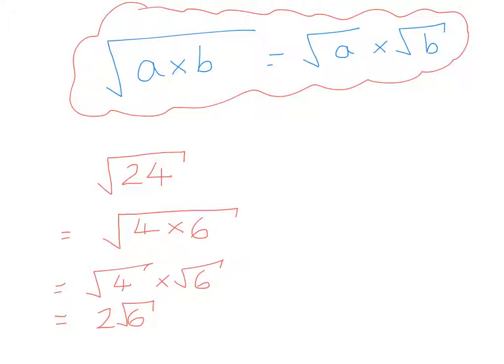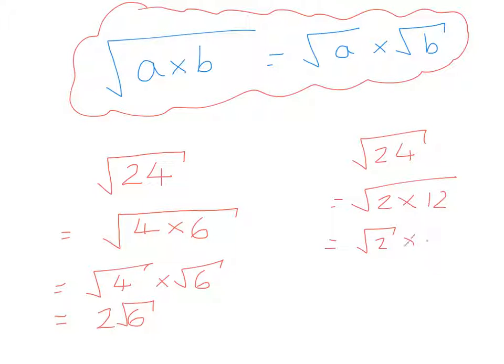If instead we split 24 into 2 times 12, using the same property we could split it into root 2 times root 12 - but this would require more work to simplify further.